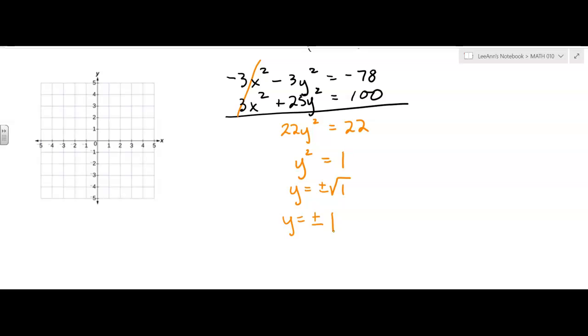And so I get y equals plus or minus 1. Let's take the positive 1 first. So our equation, I don't want to scroll back up, so I'm just going to write it again. It was x squared plus y squared equals 26. If I put in a positive 1, so let's let y equal 1. I get x squared plus 1 squared equals 26. Or x squared plus 1 equals 26. Or x squared equals 25.